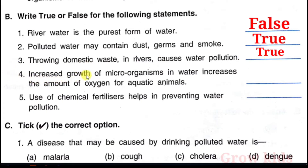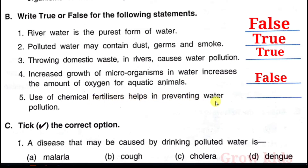Question 4: Increased growth of microorganisms in water increases the amount of oxygen for aquatic animals — False. Question 5: Use of chemical fertilizers helps in preventing water pollution — False.